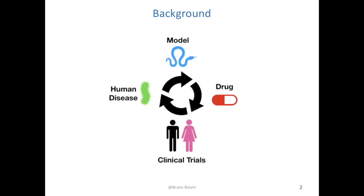To understand where the data comes from and why this project is relevant, it's important to understand the typical drug development cycle. The first step in drug development is to port a human disease into a model which can be animals, cells, and microorganisms.